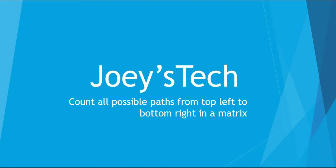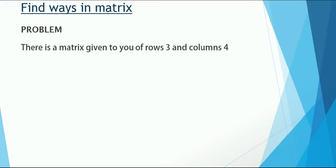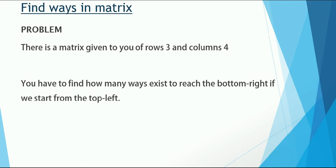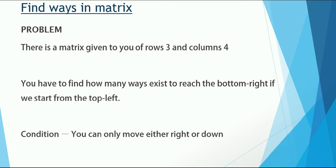Let's jump to the problem statement. There will be a matrix given to you, and the dimensions of that matrix are three by four — three rows and four columns. The problem is very simple: you have to find how many paths exist so that you can reach the bottom-right from the top-left. There is one condition: you can only move either right or down. This constraint also makes the problem much simpler.